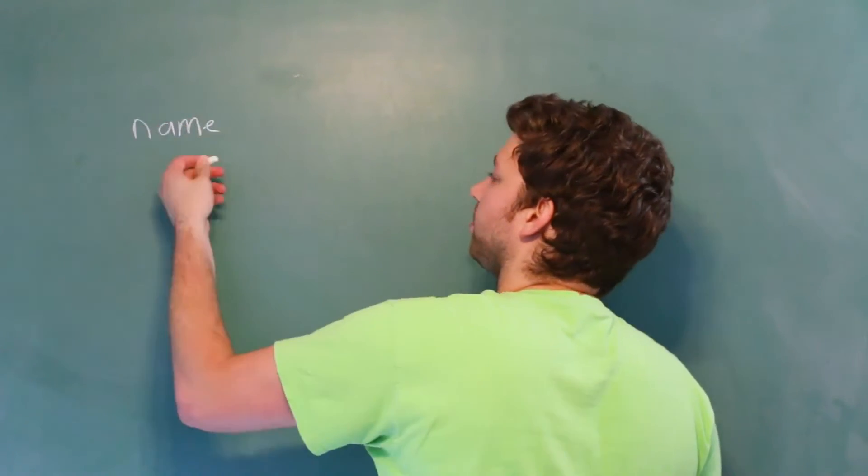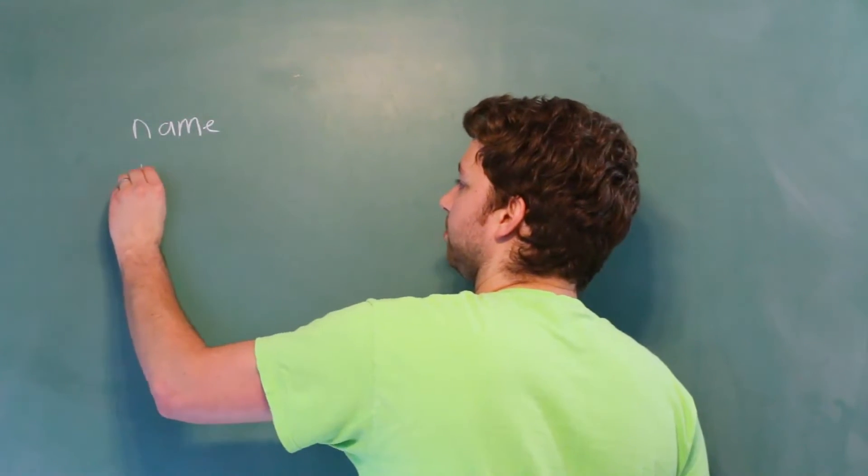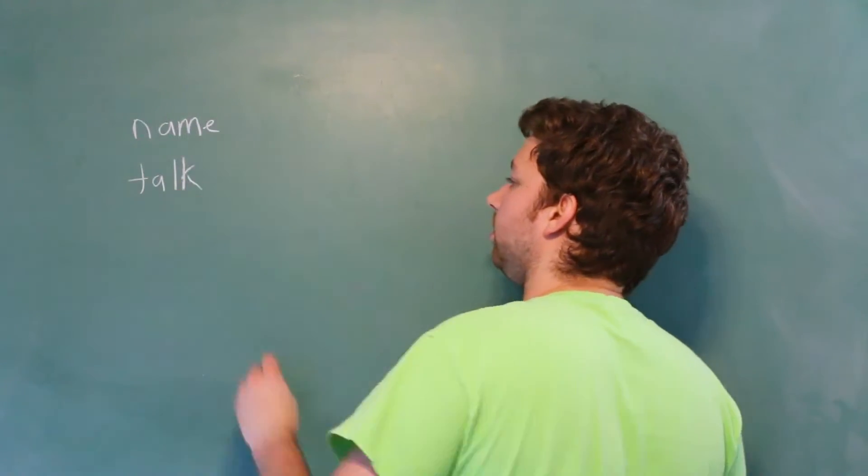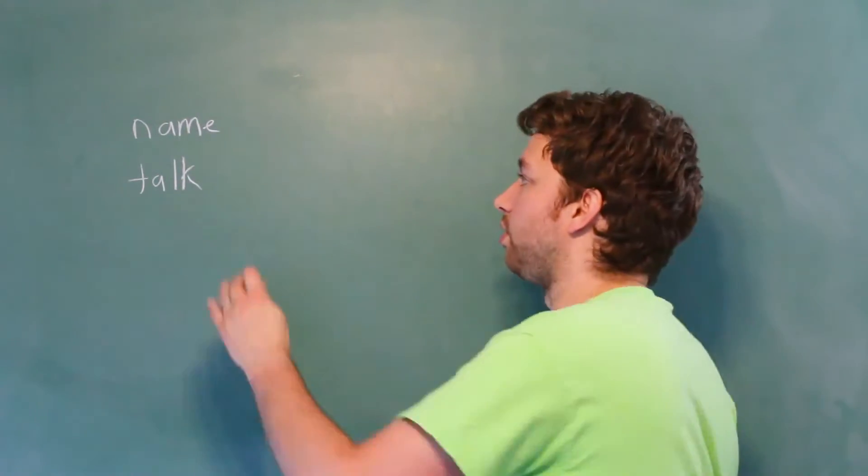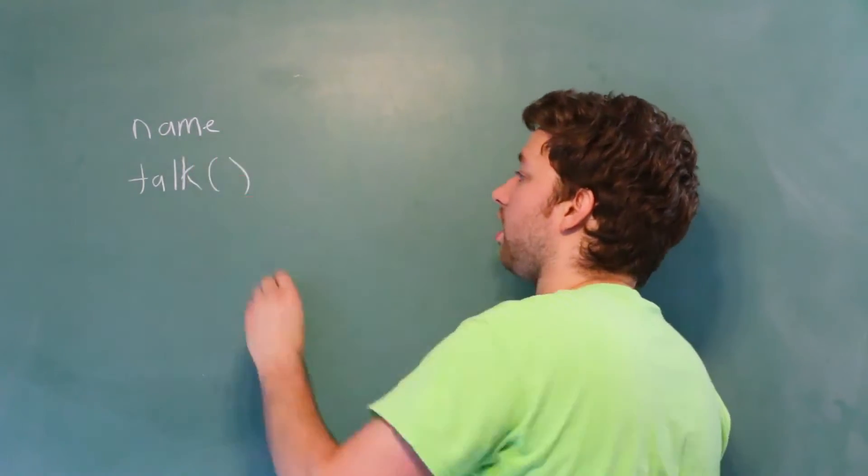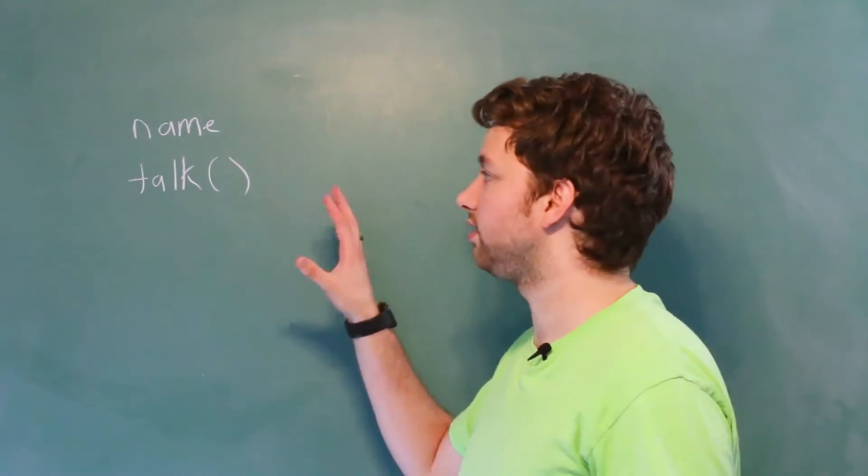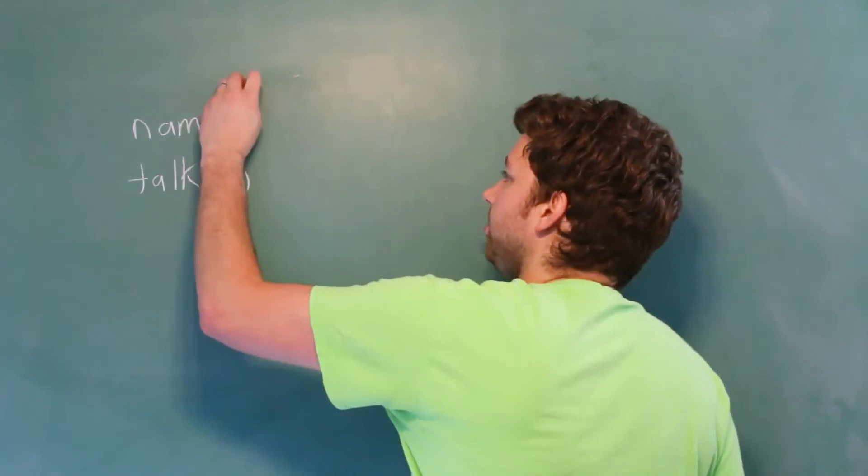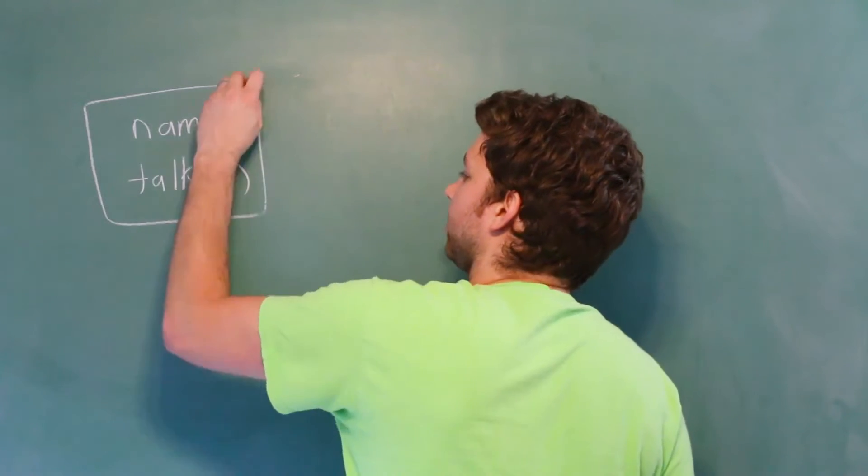For example, a person might have a name and they might be able to talk. Well, we can represent these in code. So name can be a variable. Talk can be a method. And we're basically defining the structure. And this structure is what's known as a class.